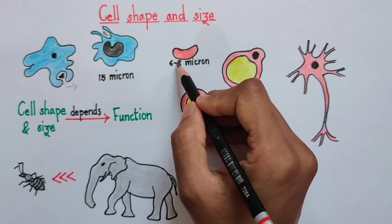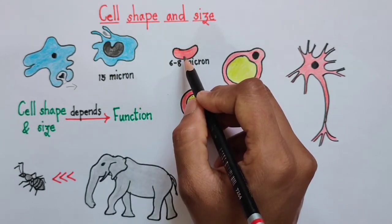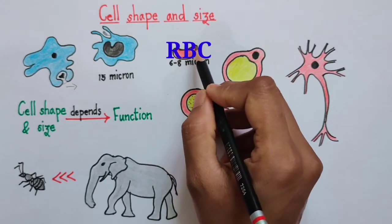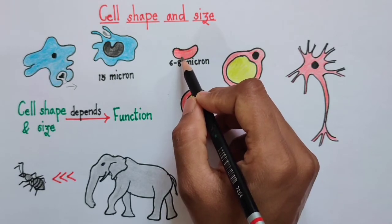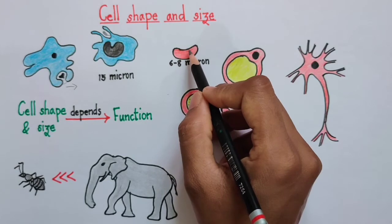Now moving ahead, coming to the second category of cells which have a definite shape. So this is my RBC. We know that RBC has a unique biconcave shape. Now why?